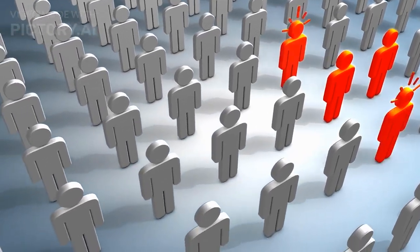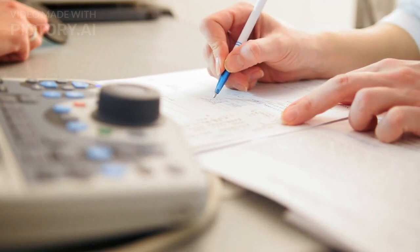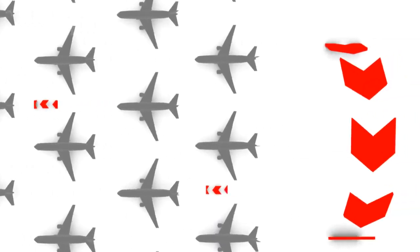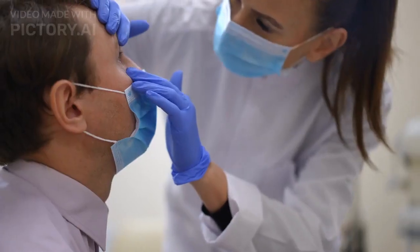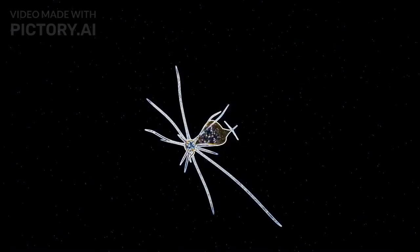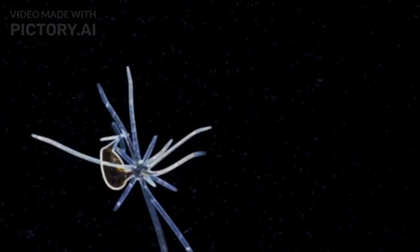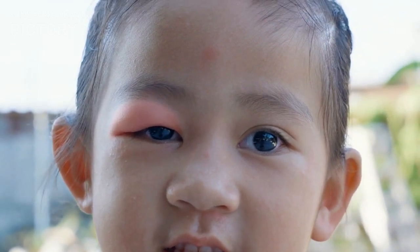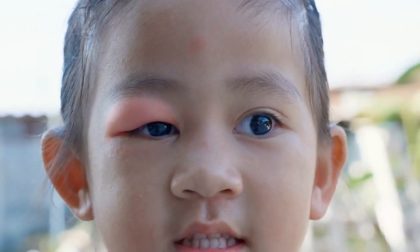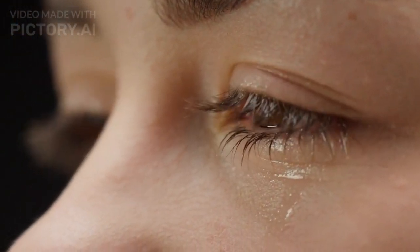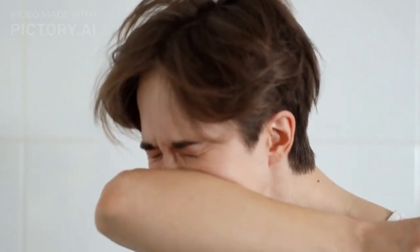Causes and Types. Let's talk about the causes. Conjunctivitis can be triggered by various factors, leading to different types of the condition. One common type is viral conjunctivitis. Viruses, particularly adenoviruses, are often responsible for this type. It's highly contagious and can spread through direct contact with infected eye secretions or contaminated objects. Symptoms include watery discharge, redness, itchiness, light sensitivity, and that gritty feeling in the eye. It's often associated with a cold or upper respiratory infection.